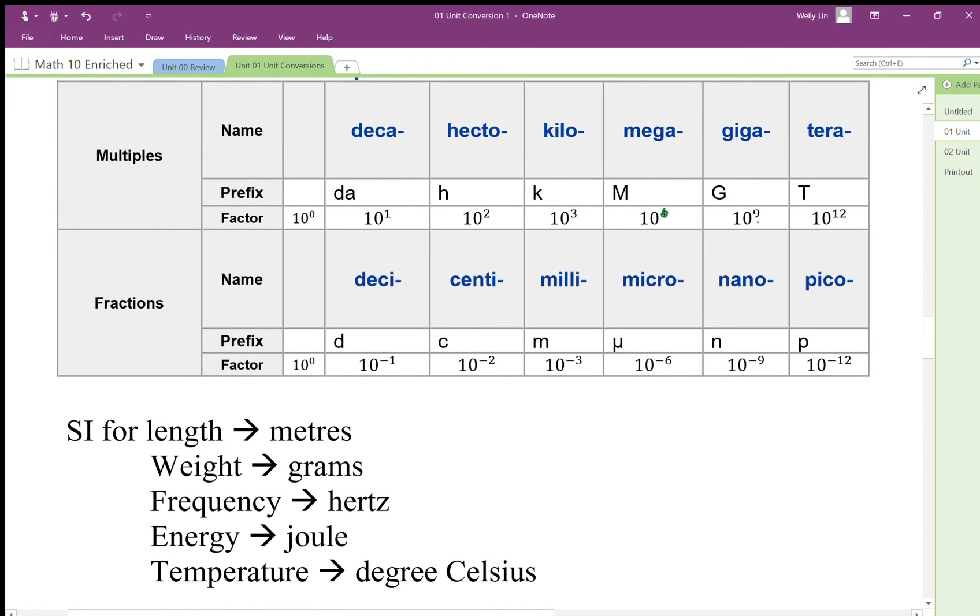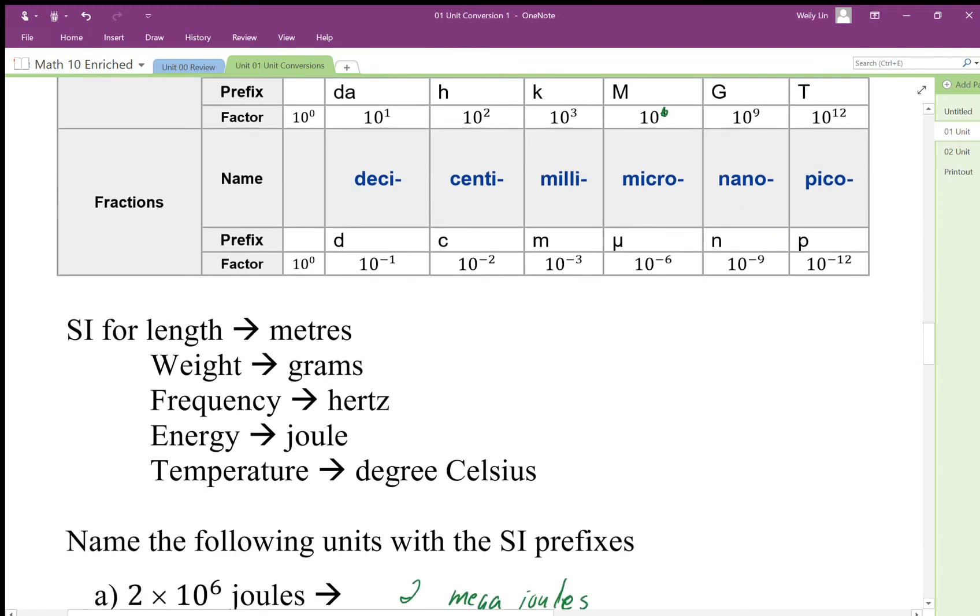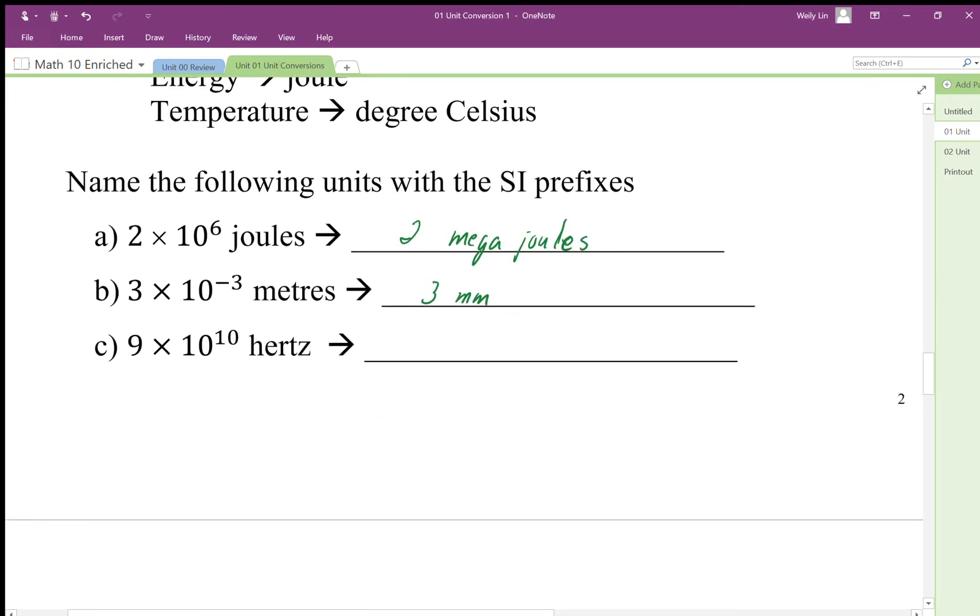We need to express this with giga. We only have 10 to the 9, so we have to rewrite this as 90 times 10 to the 9, and that becomes 90 gigahertz. That's the frequency of how we measure frequency.